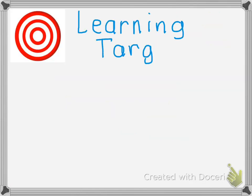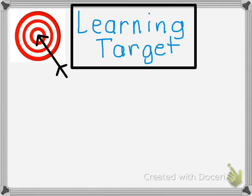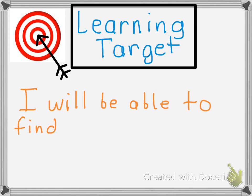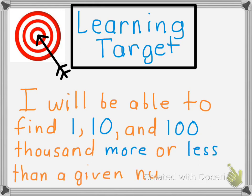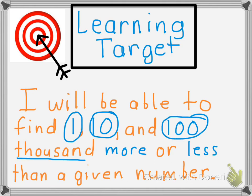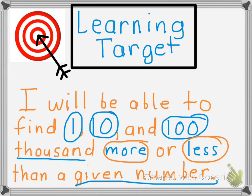The first thing we need to do is review our learning targets. Our learning target is what we will go home and tell our mom and dad that we learned. Our learning target is: I will be able to find 1, 10, and 100,000 more or less than a given number. Let's go ahead and take a look at our first example.